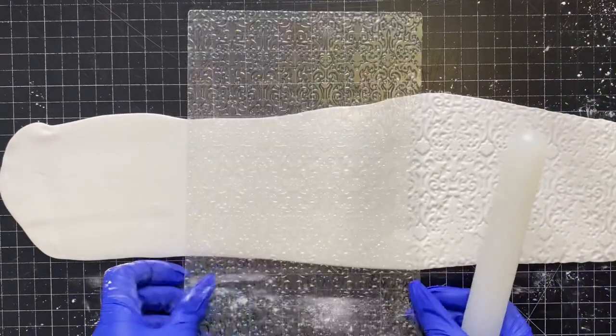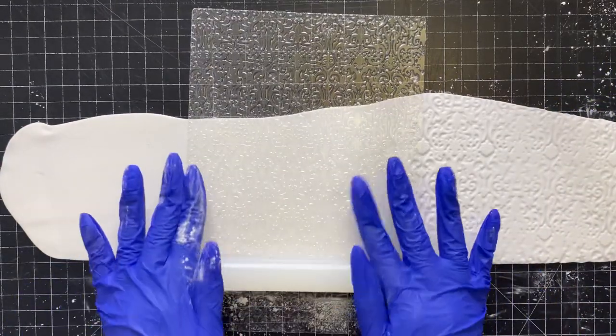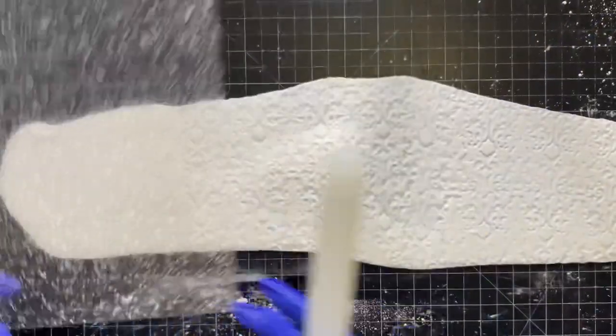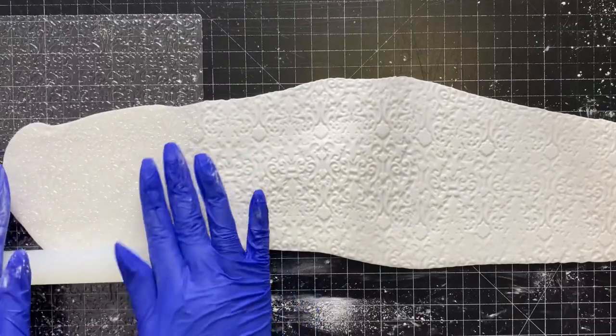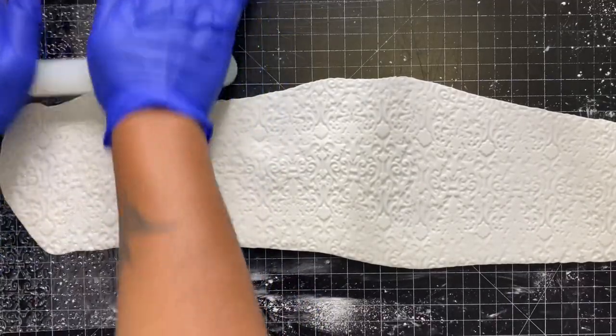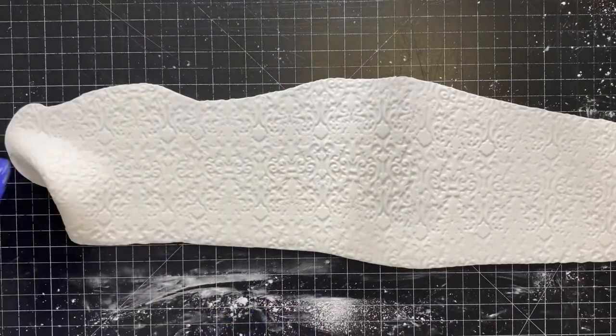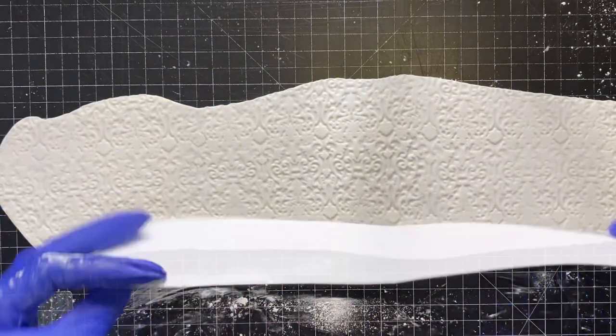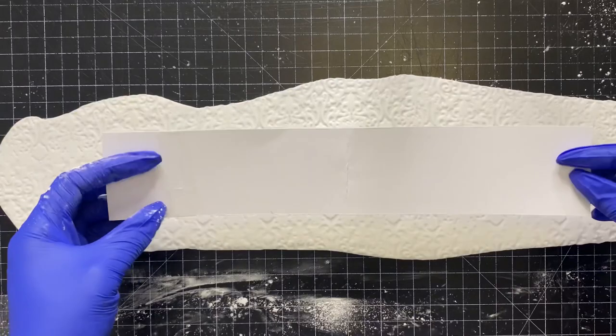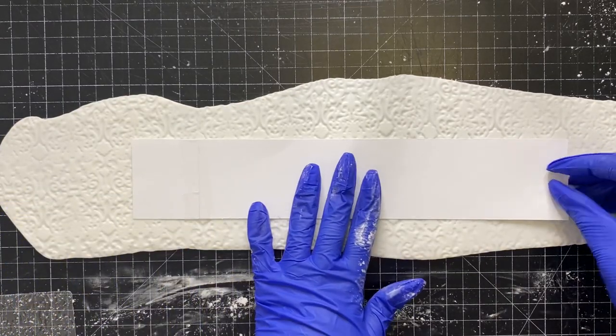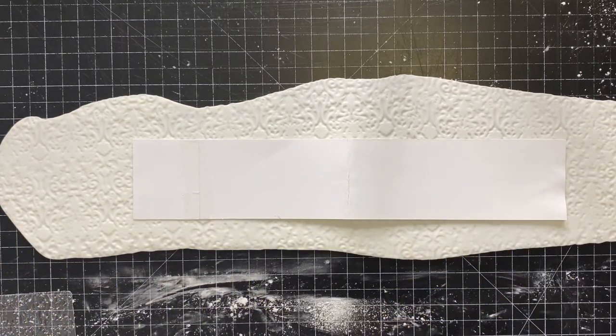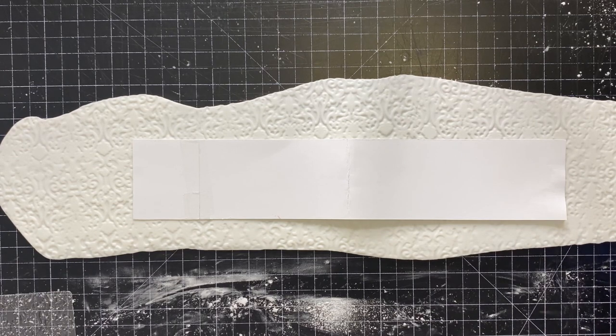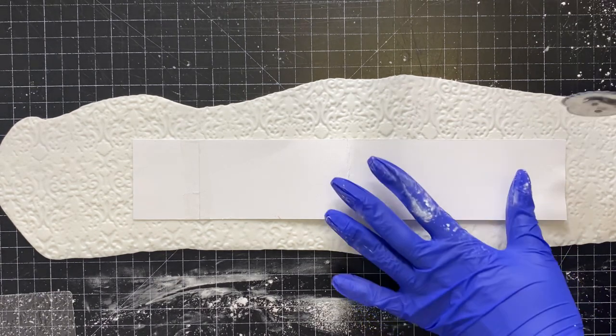I rolled out some fondant and here I am using my texture mat. You can use any texture mat and I'm just going over that fondant. You can roll this piece a little thicker just to give it a little body but as you can see here I rolled mine's really thin. The texture helps to hide that, it's going to basically hide the crown.